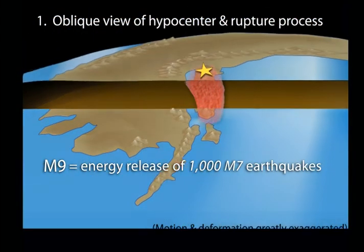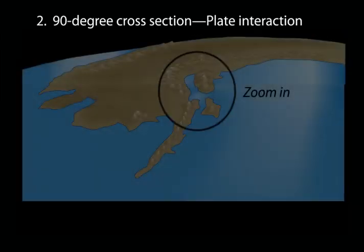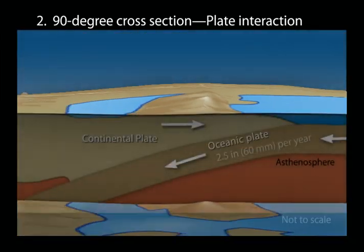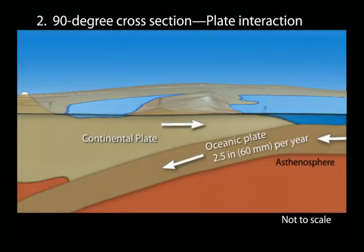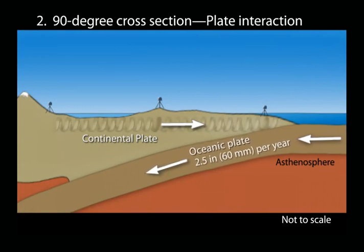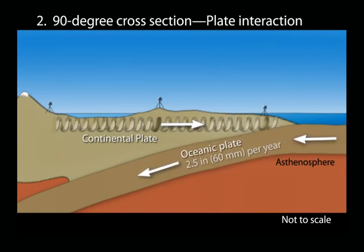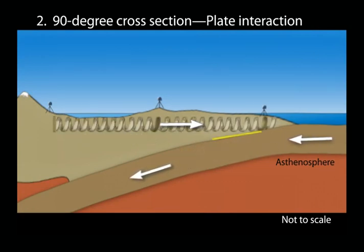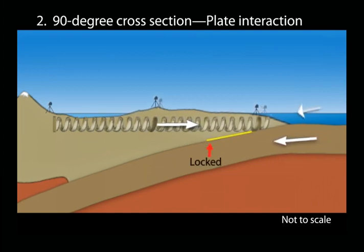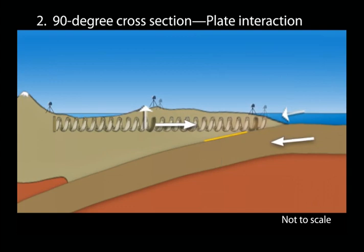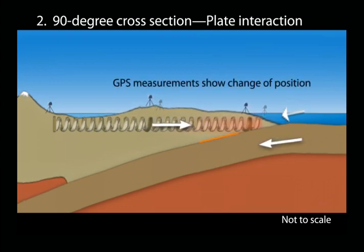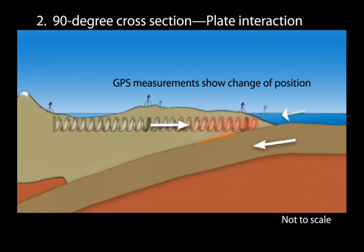Let's zoom in now to a cross-section to view the plate interaction. The dense oceanic plate dives beneath the more buoyant continental plate at a rate of about 2.5 inches per year. Because tectonic plates are elastic like a spring, converging plates build energy at the leading edge of the continent. Locked by friction, the upper plate is forced back and shortened, raising the land surface. GPS, not available in 1964, is now available to measure that strain.